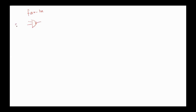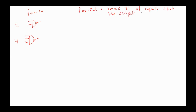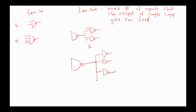Fan-in is defined as the number of inputs to the gate — for example, here fan-in equals 2. Fan-out is defined as the maximum number of inputs that the output of a single logic gate can feed. For example, here the fan-out equals 2, and here the fan-out is 4.